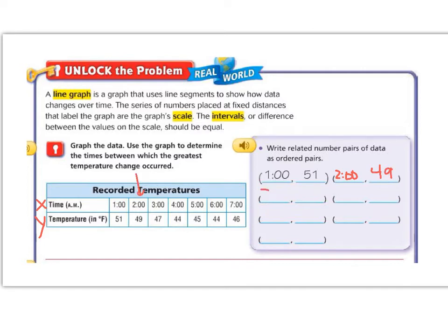At three o'clock it was 47, at four o'clock it was 44, at five o'clock it was 45, at six o'clock it was 44, and at seven o'clock it was 46.